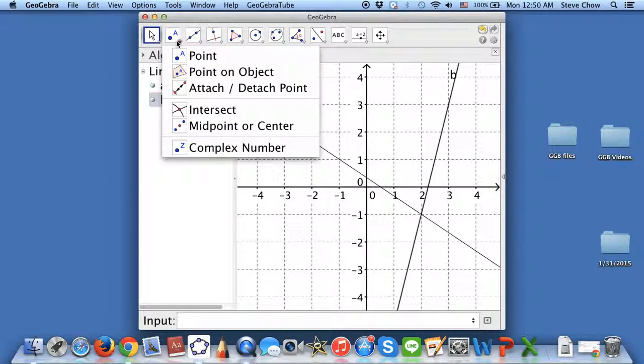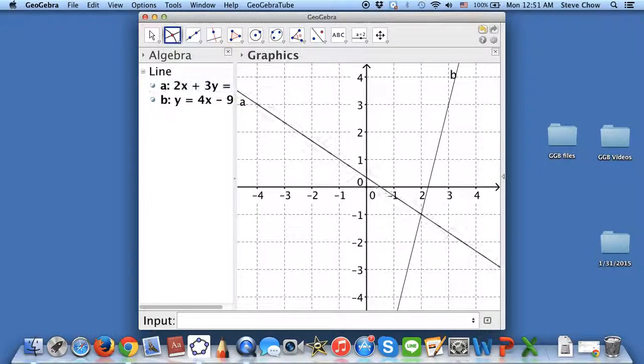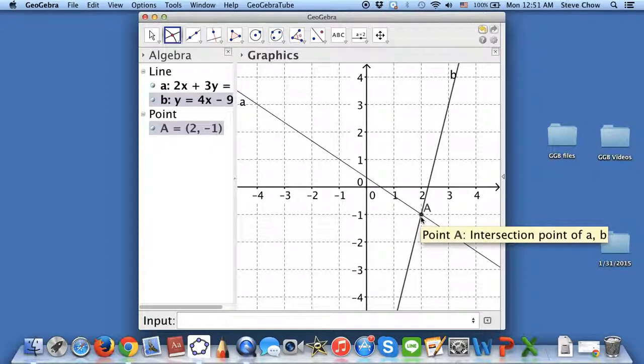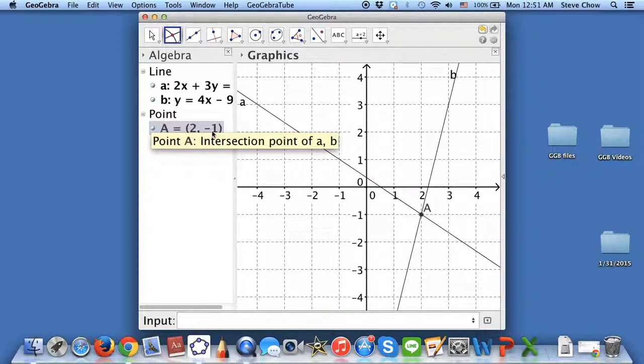What you do is go to this point right here, get this option, and you can go down to intersect. Click on one of the lines and then click on the other line. You see it appears the data point A right here for you. A is equal to (2, -1) and that's the point of intersection.